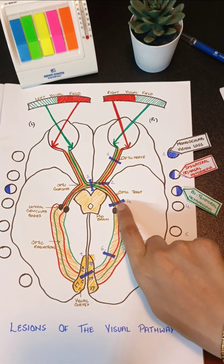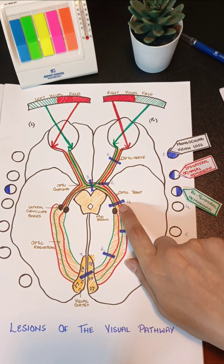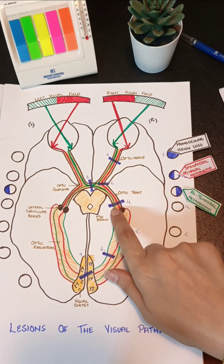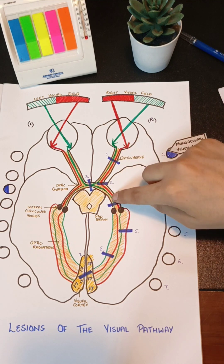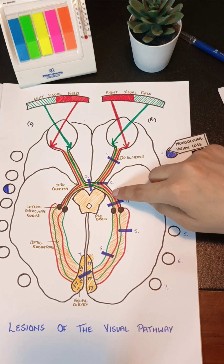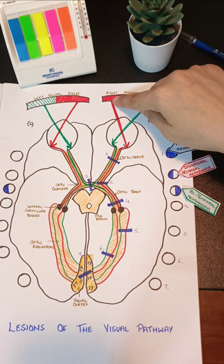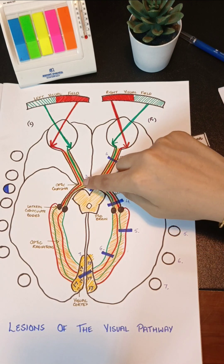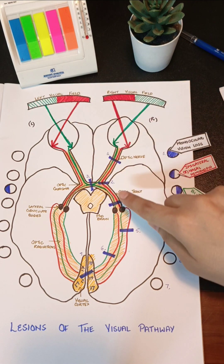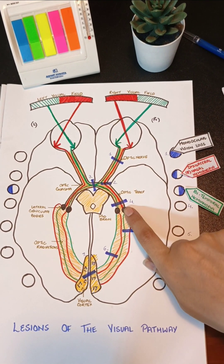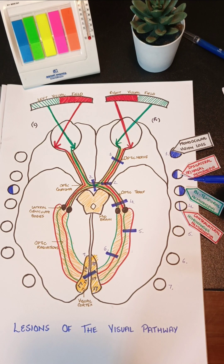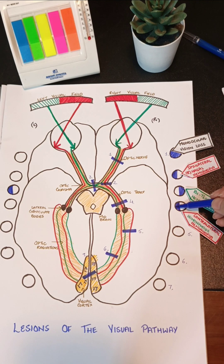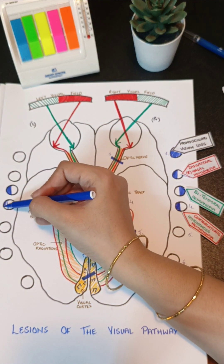Lesion number four involves the optic tract, which needs to be understood carefully. The optic tract carries the temporal fibers from the same eye but the nasal fibers from the opposite side. So a lesion of the temporal fibers of the same eye causes loss of the nasal field of that eye, and a lesion of the nasal fibers causes loss of the temporal field of the opposite eye. This produces the condition called contralateral homonymous hemianopia.